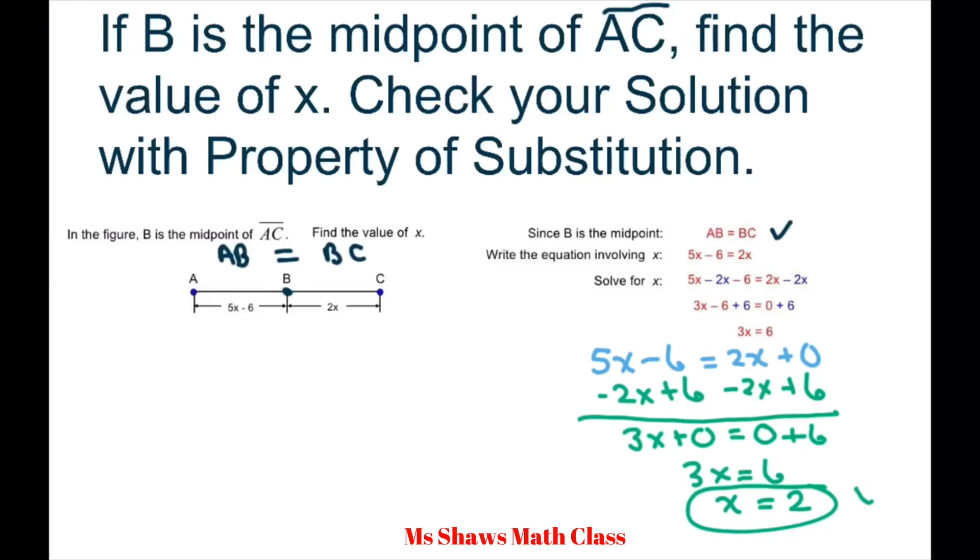So we did that, and now we need to check our solution. We're going to come back here and see if it's true. Does AB equal BC, given that our X is 2? So we're going to do substitution. That means you replace every X with the 2.